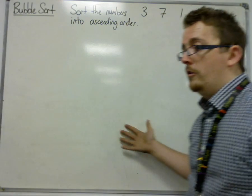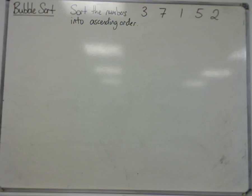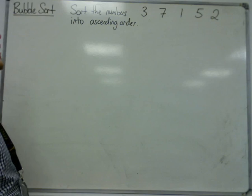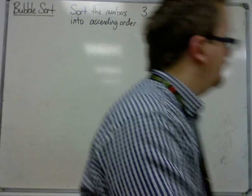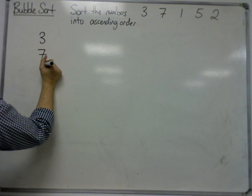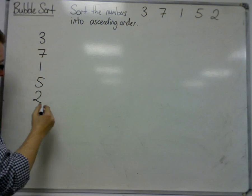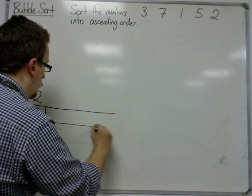So I'm going to show you how we set it out. I set it out in a particular way, in vertical columns. So we've got a vertical column, 3 7 1 5 2. We're going to put them into ascending order. And at each pass, so that's each line as we go, we are going to count the number of comparisons and swaps that we make.